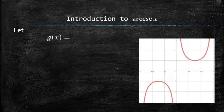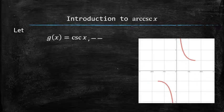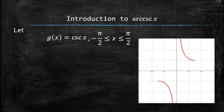Now, let's make a new function g of x from the cosecant of x by restricting the domain of the cosecant function to the interval between negative pi over 2 and pi over 2.